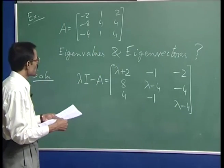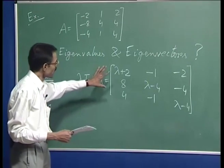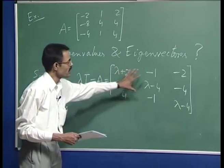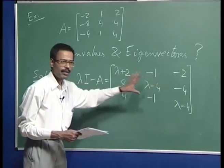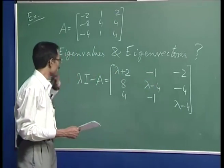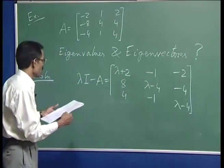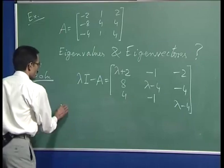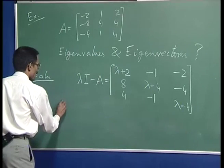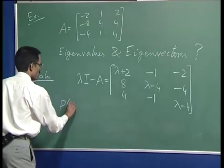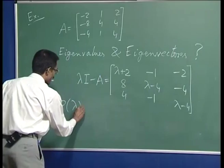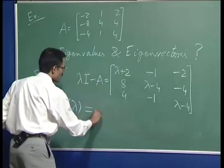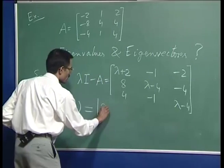Now the characteristic polynomial is the determinant of this matrix. The characteristic polynomial will be the determinant of this matrix.